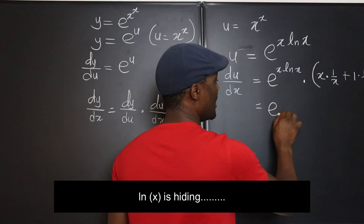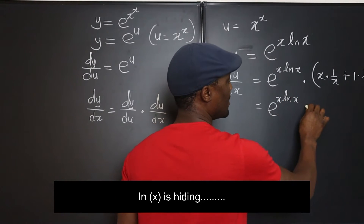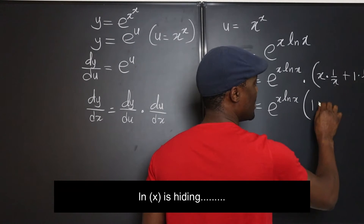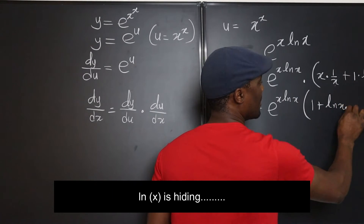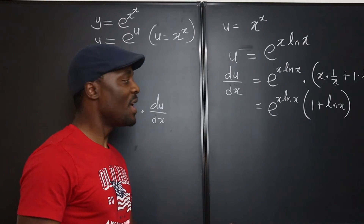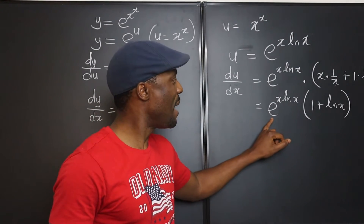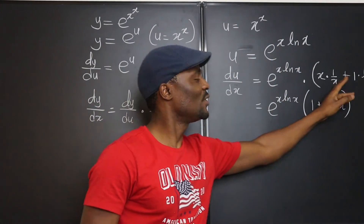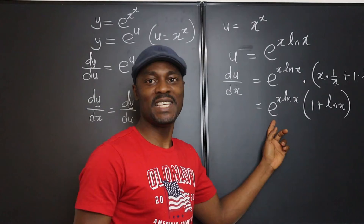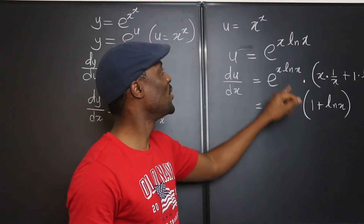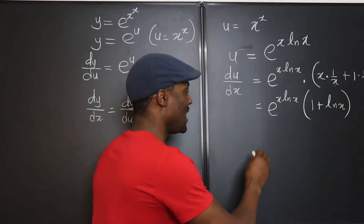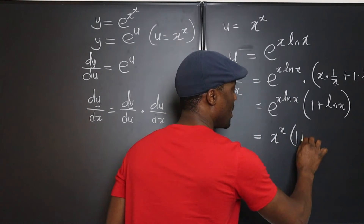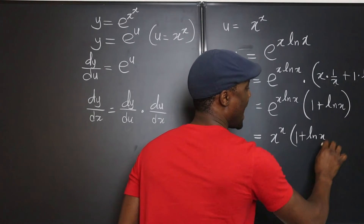This gives us e to the x ln x, multiplied by x times one over x, which equals one, plus one times ln x. We don't want any e in our answer, but remember this expression e to the x ln x is just x to the x. We just brought e and ln in so we could do all of this work. We don't need e, we don't need ln. Let's take it back to the original state.